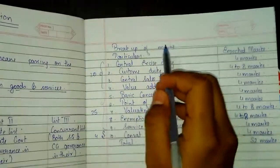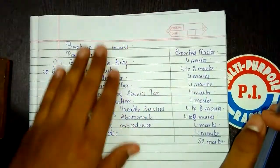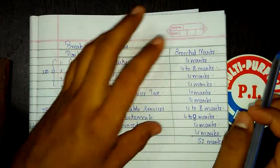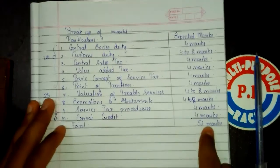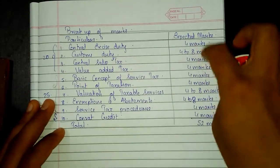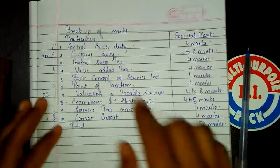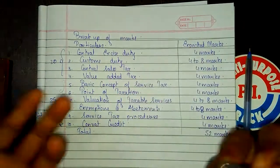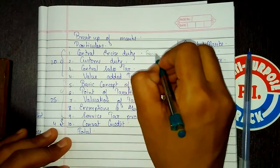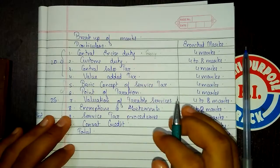The most important thing every student wants: the breakup of marks. Please don't pause the video right now to start copying — listen to me first. Central Excise Duty: maximum 4 marks. This is excluding options. That means whichever sums you attempt, these are the maximum limits, and finally 52 marks total. Central Excise Duty maximum 4 marks — so whatever we study for central excise duty is good enough for 4 marks. This is an easy chapter; please write 'easy chapter,' but you need to revise it properly.